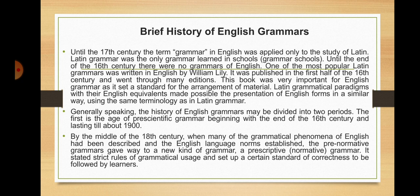Generally speaking, the history of English grammars may be divided into two periods. The first is the age of pre-scientific grammar, beginning with the end of the 16th century and lasting till about 1900. By the middle of the 18th century, when many grammatical phenomena of English had been described and English language norms established, the pre-normative grammars gave way to a new kind of grammar — a prescriptive or normative grammar. It stated strict rules of grammatical usage and set up a certain standard of correctness to be followed by learners.